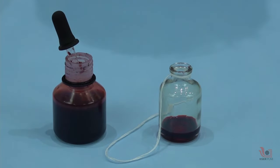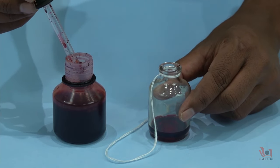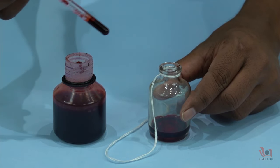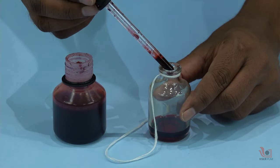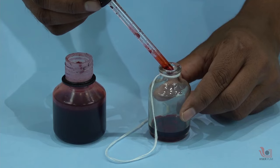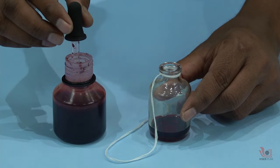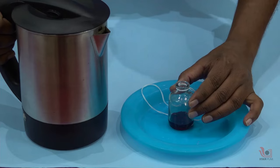Now let's understand another method of heat transfer known as the convection method. Take a small glass bottle and tie a thread to the neck of the bottle. Then put a few drops of ink or food color in it. Fill this glass bottle with hot water.